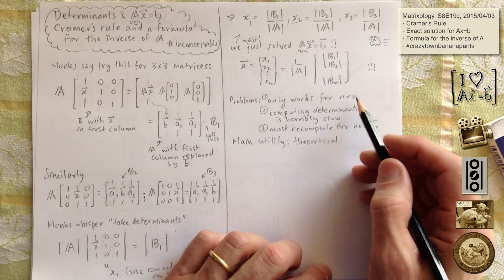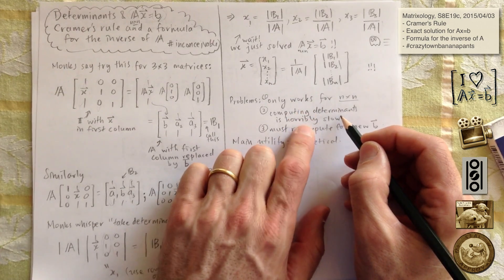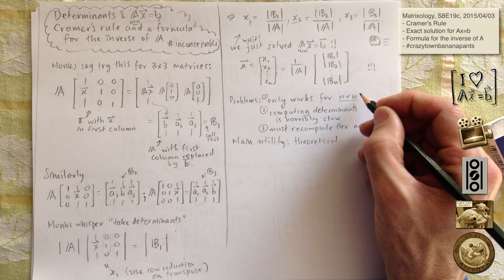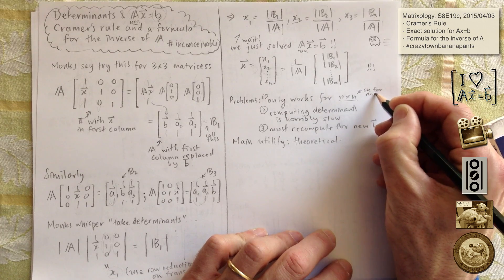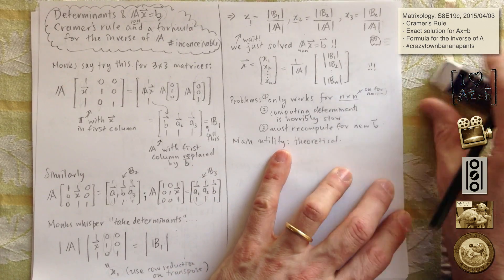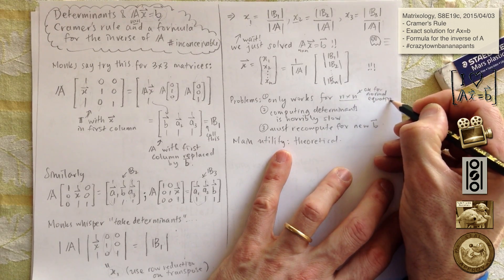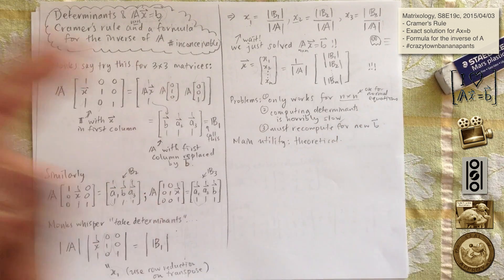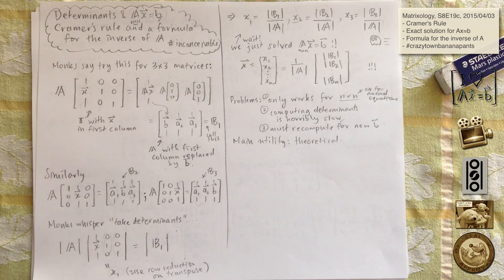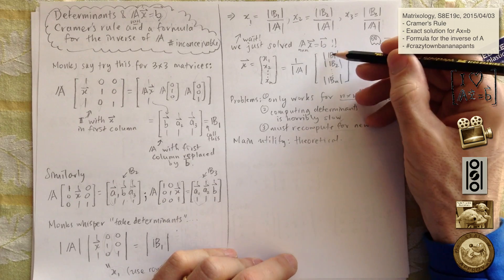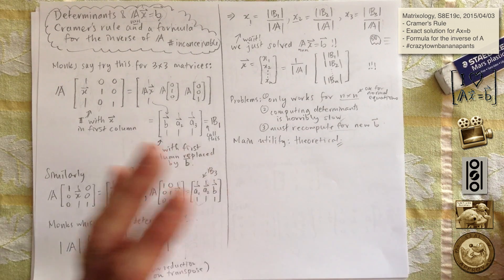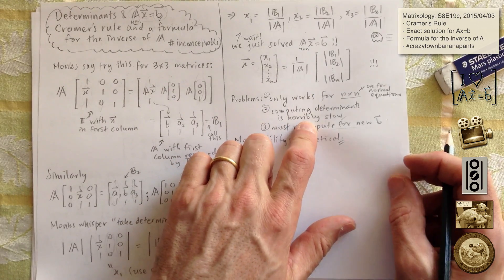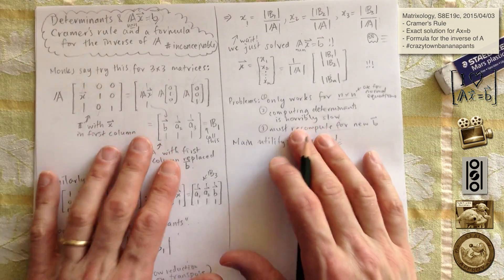This is actually a formula — it solves our problem. But it's not something we will use in general, because it only works for n by n, and computing determinants is really, really awfully slow. This is factorial business: a 17 by 17 has 17 sixteen-by-sixteens, and they have 16 fifteen-by-fifteens each. And you have to recompute it for each new b. So the main use is theoretical, or for two by two, three by three, maybe four by four cases.